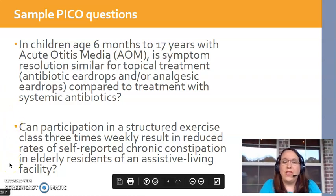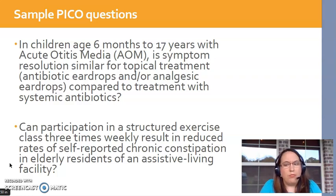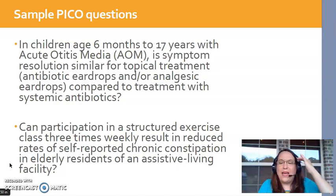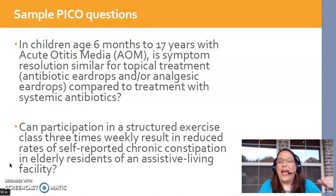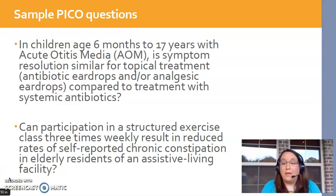Here's another example: Can participation in a structured exercise class three times a week reduce rates of self-reported chronic constipation in elderly residents of an assisted living facility? Our population is elderly residents of assisted living facilities. The intervention is a structured three-times-a-week exercise program. There's no explicit comparison, but we can infer it would be those who don't participate — so this is a PO question. The outcome is self-reported chronic constipation, perhaps tracked through a diary.